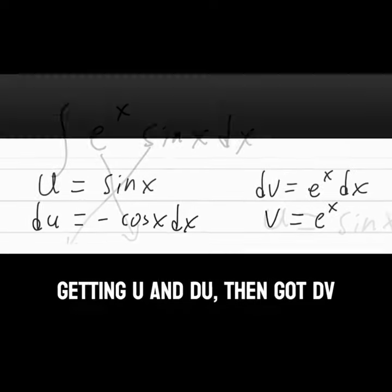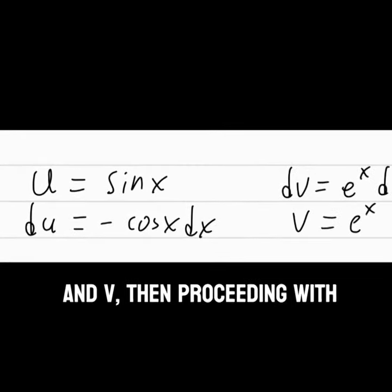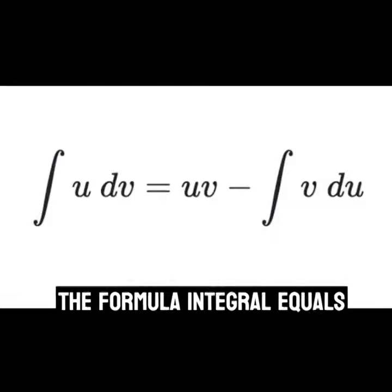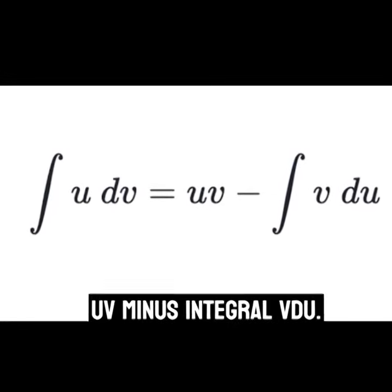The student began by getting u and du, then got dv and v, then proceeding with the formula integral equals uv minus integral v du.